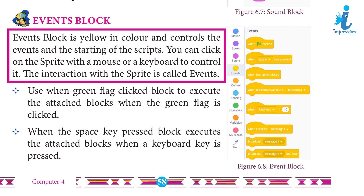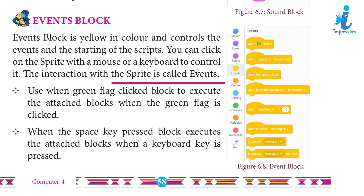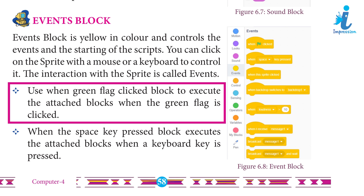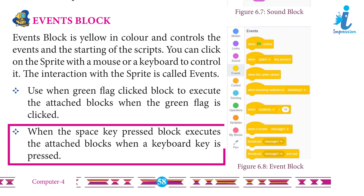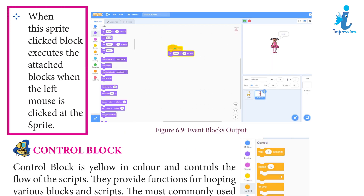Events block is yellow in color and controls the event and the starting of the script. You can click on the sprite with a mouse or a keyboard to control it. The interaction with the sprite is called events. Use 'When Green Flag Clicked' block to execute the attached block when the green flag is clicked. 'When Space Key Pressed' block executes the attached blocks when a keyboard key is pressed. 'When This Sprite Clicked' block executes the attached block when the left mouse is clicked on the sprite.